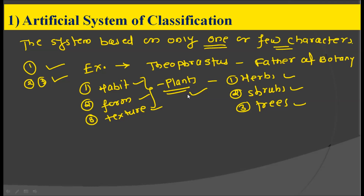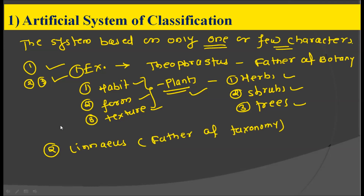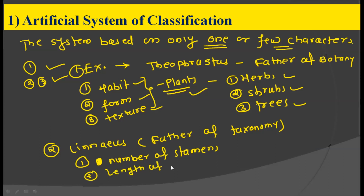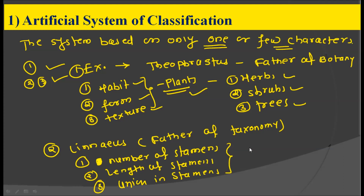The second example for the artificial system of classification is Linnaeus, who is also called the father of taxonomy. He used characters like the number of stamens, length of stamens, and union in stamens to classify plants into various groups. So the artificial system of classification is based on only one or few characters, and we have studied two examples: Theophrastus, who used habit, form, and texture, and Linnaeus, who used stamen characters.